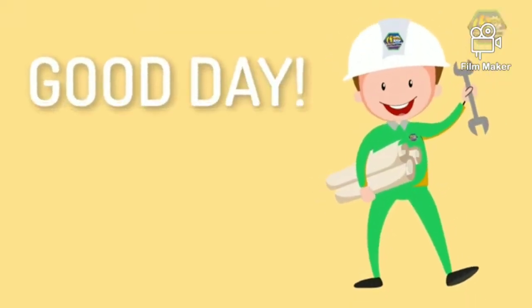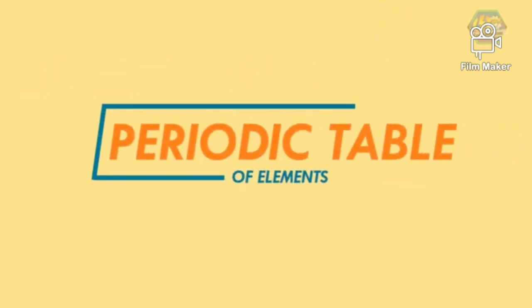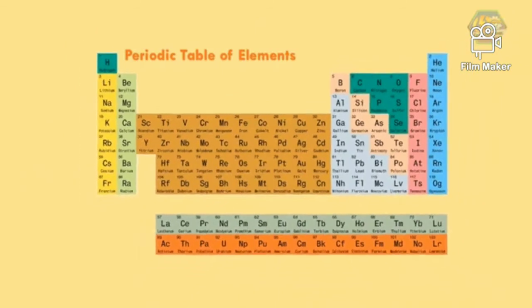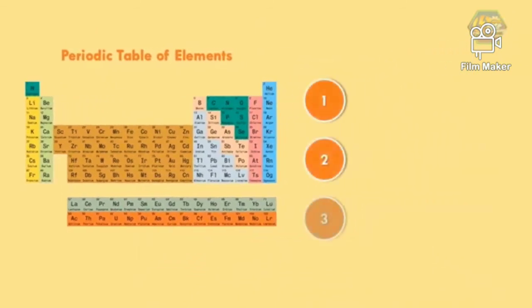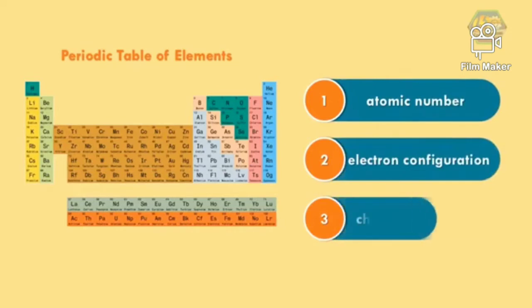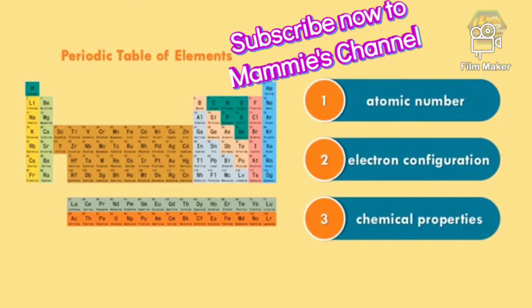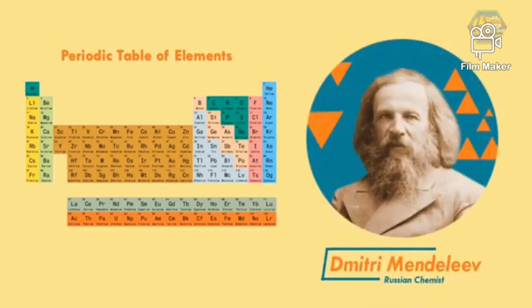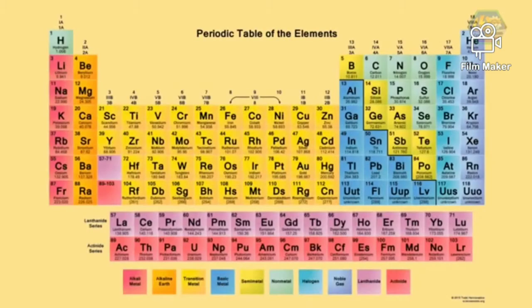Good day learners, this is easy engineering. This time we are going to talk about the periodic table of elements. The periodic table of elements is a tabular display of the chemical elements arranged by atomic number, electron configuration, and recurring chemical properties. It was in 1869 that a Russian chemist Dimitri Mendeleev published the first recognizable periodic table. In this video we will be familiarizing the periodic table of elements.